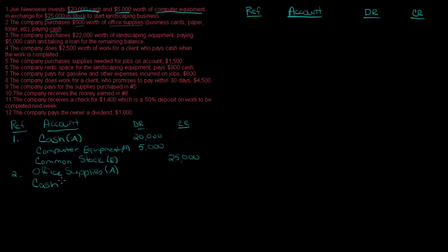Most students understand what's going on with cash, so you might want to do cash first. Is my cash going up or going down? If I'm purchasing something and I paid cash, my cash goes down, so I'm going to credit cash $500. What's happened to my office supplies? I have more, which means my balance is going up. When an asset goes up, we debit the account.